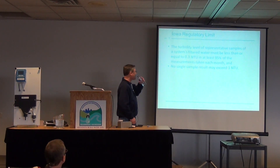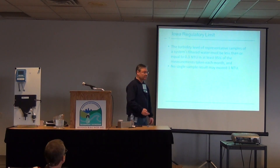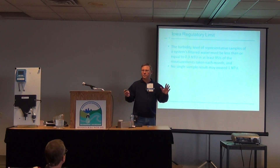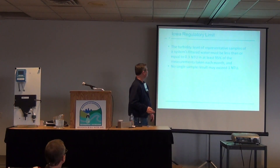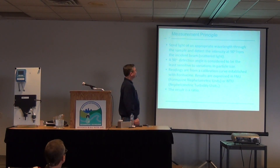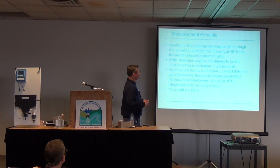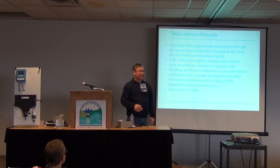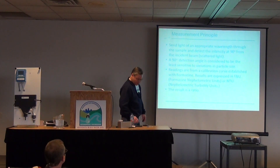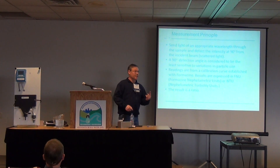This is a standard for drinking water. The EPA-approved method — Method 181 — calls for a white tungsten light source at 515 nanometers. That's the appropriate wavelength. We actually make an instrument that uses a red LED light source at 860 nanometers, which can measure higher ranges.